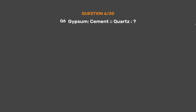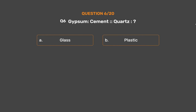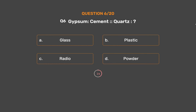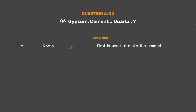Question No. 6. Gypsum : Cement :: Quartz : ? Option A: Glass. Option B: Plastic. Option C: Radio. Option D: Buck powder. The correct answer is Option A, Glass. The first is used to make the second.